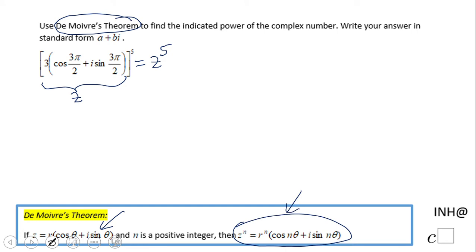So let's see, in this case what we get: we get c to the fifth power will be 3 to the fifth power, parentheses, cosine of 5 times 3π over 2 plus i sine of 5 times 3π over 2.